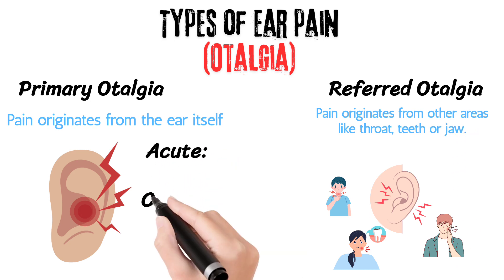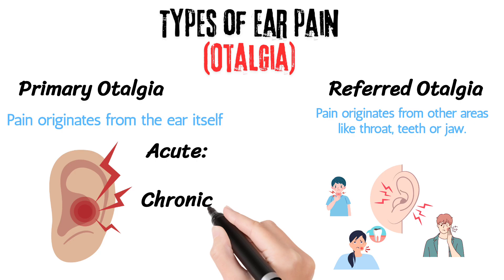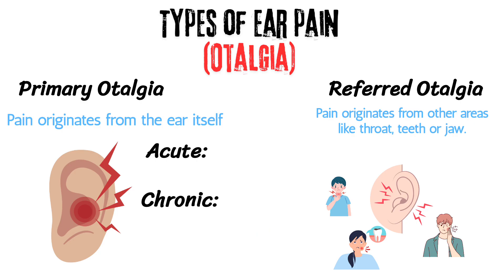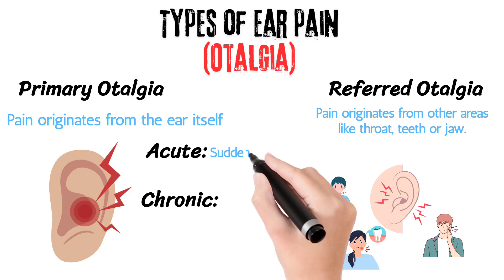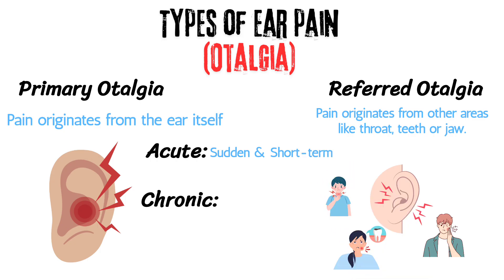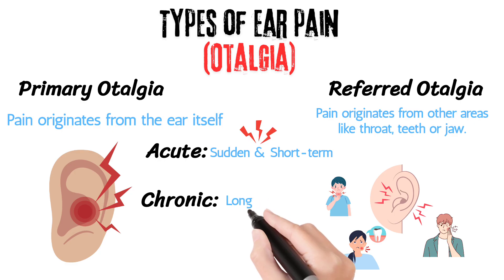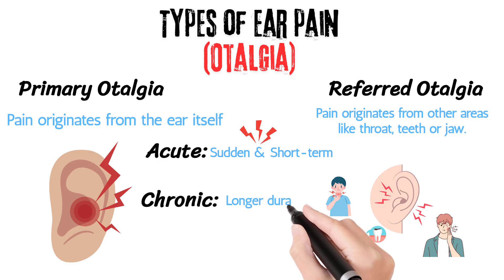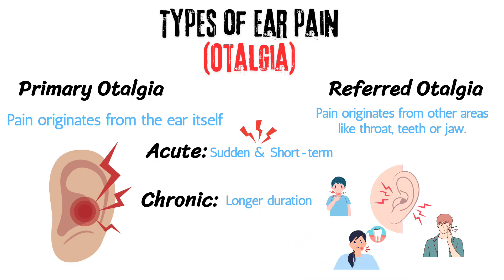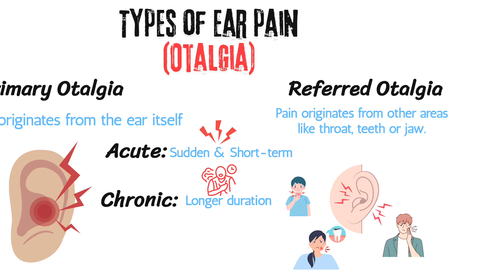Ear pain can be acute or chronic. Acute ear pain is sudden in onset and short term, often due to infections. Chronic ear pain persists for a longer duration due to chronic infections or Eustachian tube dysfunction.